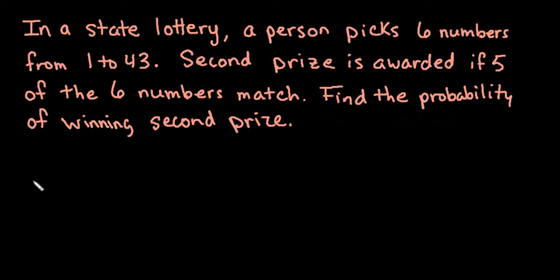For this video, I want to show you how to find a probability involving combinations. The situation we have here is in a state lottery, a person picks six numbers from 1 to 43. Second prize is awarded if five of the six numbers match, and we're going to find the probability of winning second prize.